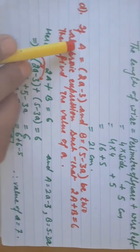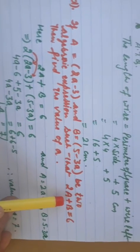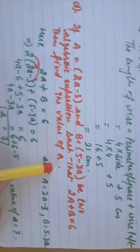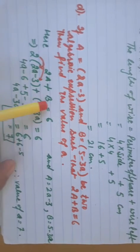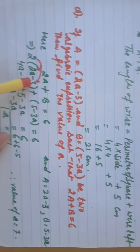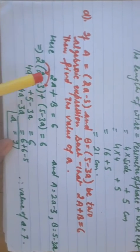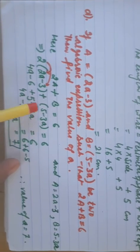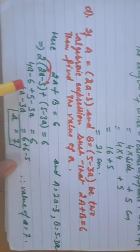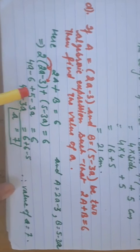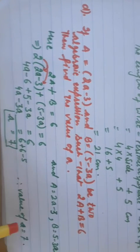Part D: capital A equals 2a minus 3 and B equals 5 minus 3a are two algebraic expressions such that 2A plus B equals 6. Find the value of small a. Substituting: 2 times (2a minus 3) plus (5 minus 3a) equals 6. Opening brackets: 4a minus 6 plus 5 minus 3a equals 6. Separating like terms: 4a minus 3a equals a, and minus 6 plus 5 equals minus 1, so a minus 1 equals 6, giving a equals 7.